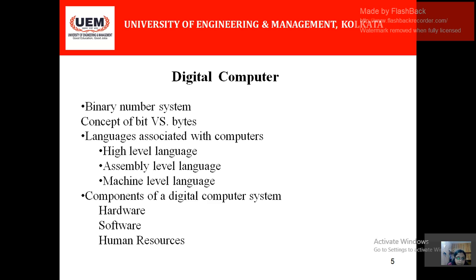Within software there are two things: system software and application software. Application software is a program or collection of programs capable of solving a particular application-oriented problem — it is specific to a problem. System software basically controls everything and supervises all other software. The third component, human resource, is the resource that deals with both hardware and software.